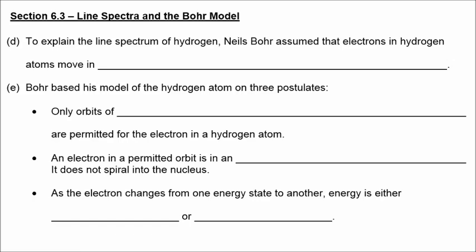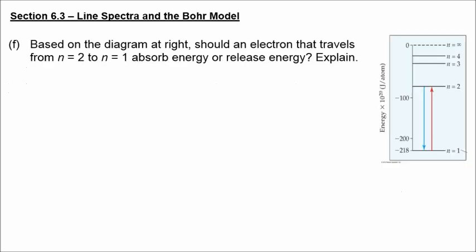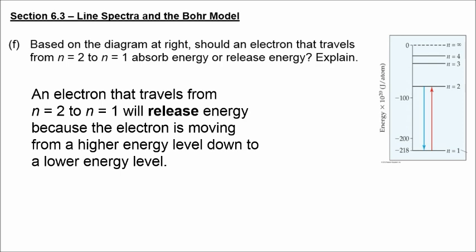To explain the line spectrum of hydrogen, Niels Bohr assumed that electrons in hydrogen atoms move in circular orbits around the nucleus. Bohr based his model on three postulates: only orbits of certain radii with specific energies are permitted; an electron in a permitted orbit does not spiral into the nucleus; and as the electron changes from one energy state to another, energy is either emitted or absorbed. An electron traveling from N equals 2 to N equals 1 will release energy because it moves from a higher energy level down to a lower one.